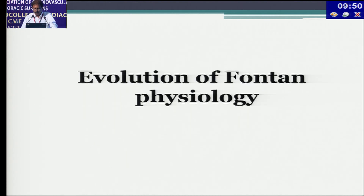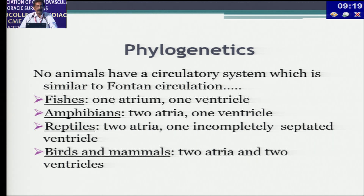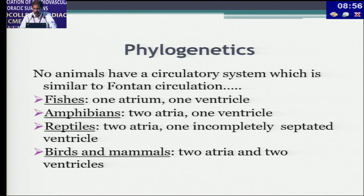Coming to the evolution of Fontan physiology — whenever I discuss it with postdoctoral students, I say Fontan physiology has no physiology in it, only pathology. It is called Fontan physiology because this circulatory system never existed in the animal kingdom during evolution. Fishes have one atrium and one ventricle; amphibians have two atria and one ventricle with good blood streaming; reptiles have two atria and one incompletely septated ventricle; birds and mammals have two atria and two ventricles. Nowhere in the animal kingdom is there a circulation similar to Fontan — that is why it is called the physiology created by Fontan.